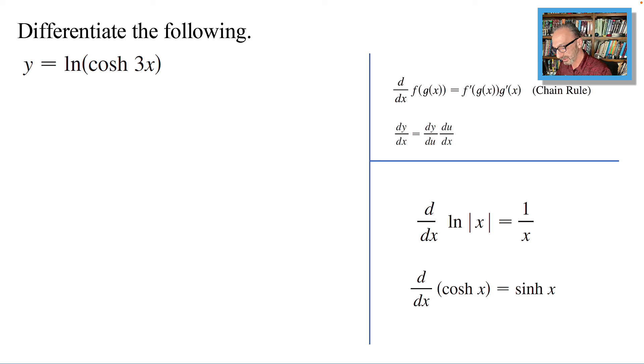We will also use the derivative of ln x as 1 over x, and the derivative of hyperbolic cosine is the hyperbolic sine without the negative sign.